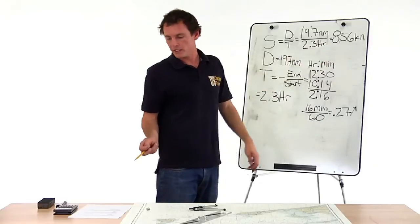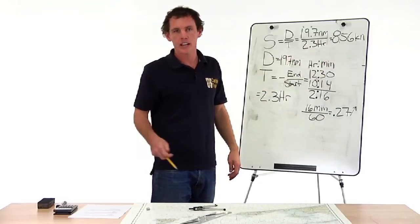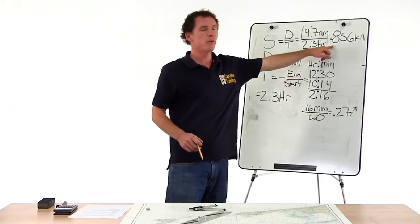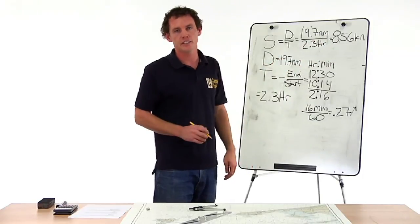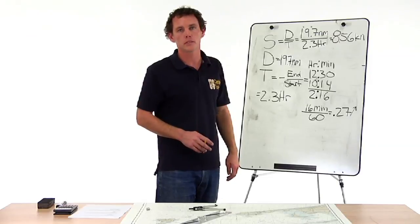One of the answers in the problem is eight point six knots. Just round eight point five six up to eight point six knots and you have your answer. That's how we do a speed made good problem.